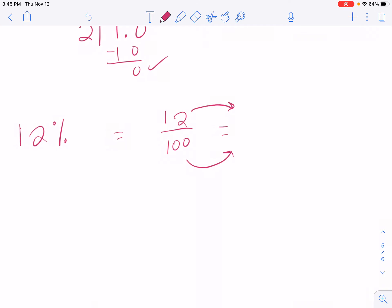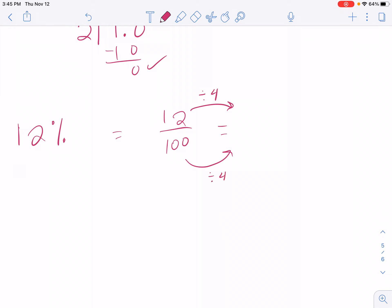So 12 and 100 could both be divided by 4. If you weren't sure about that, you could always start with 2, divide them both by 2. But this one will just save us some time. All right, so I know that 12 divided by 4 is 3. 100 divided by 4 is 25. And that can't be simplified anymore, so that is my answer.